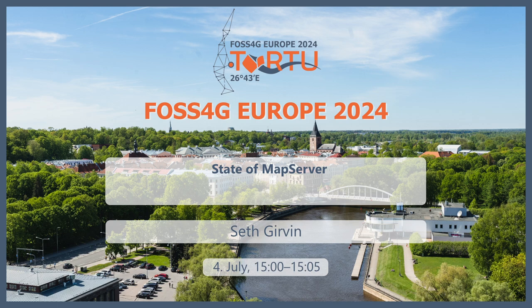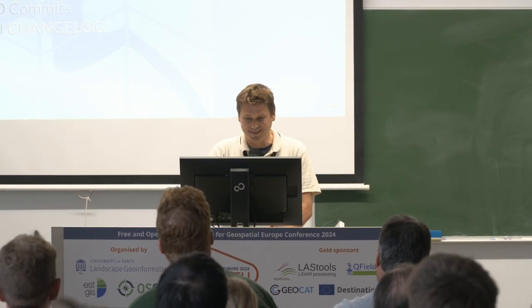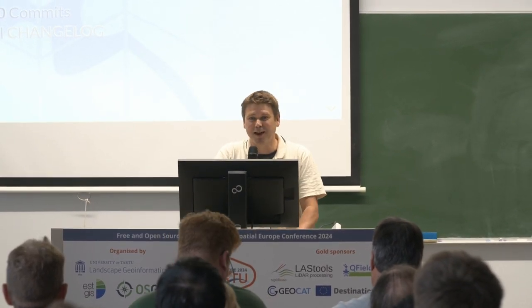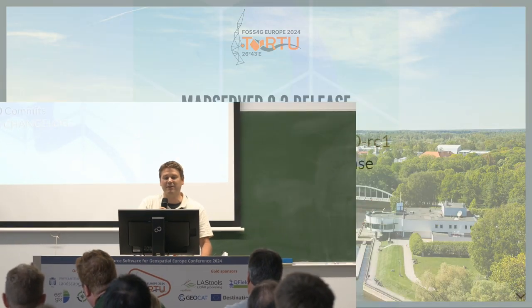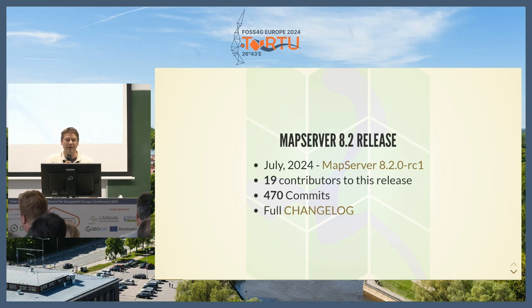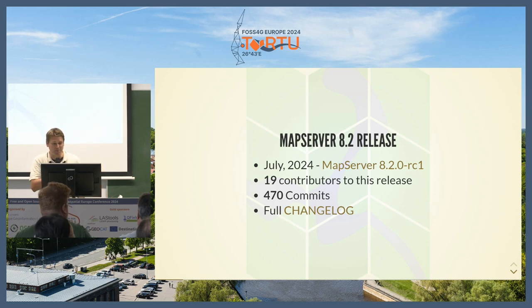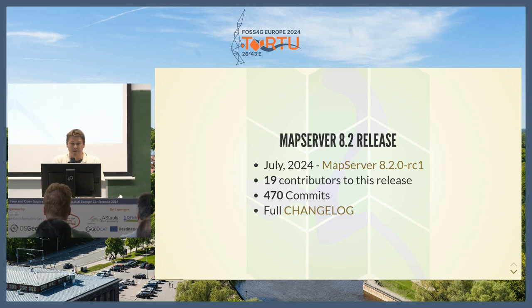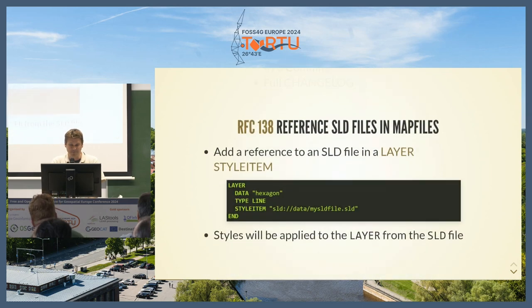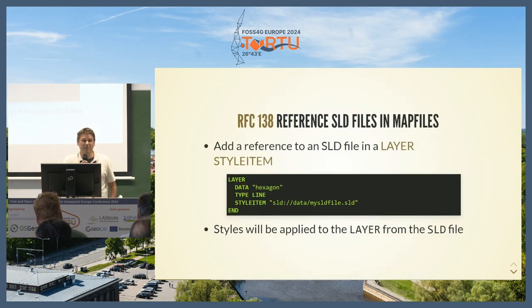Thanks, I'll get straight into it. So there's four minutes — if you don't know what MapServer is, then the next four minutes probably won't make much sense. We have a new release coming out, so that's the big news. Hopefully tomorrow there'll be the 8.2 release. That's got 470 commits and there's been almost 20 people contributing to this next release. There's a link to the presentation, so all the full changelog and things are there. I'm just going to run through some of the new features in 8.2.